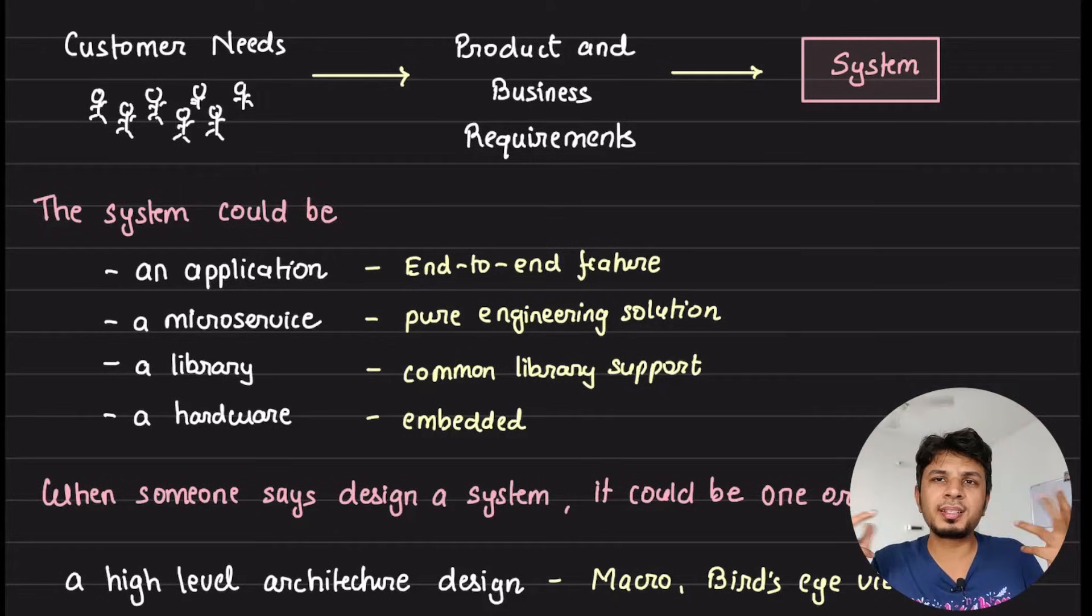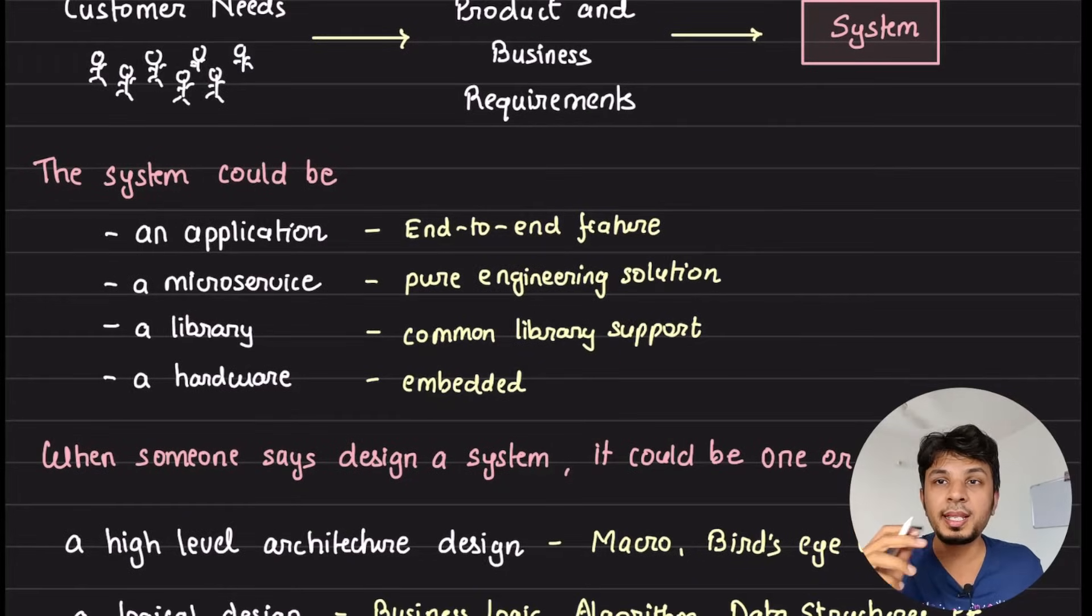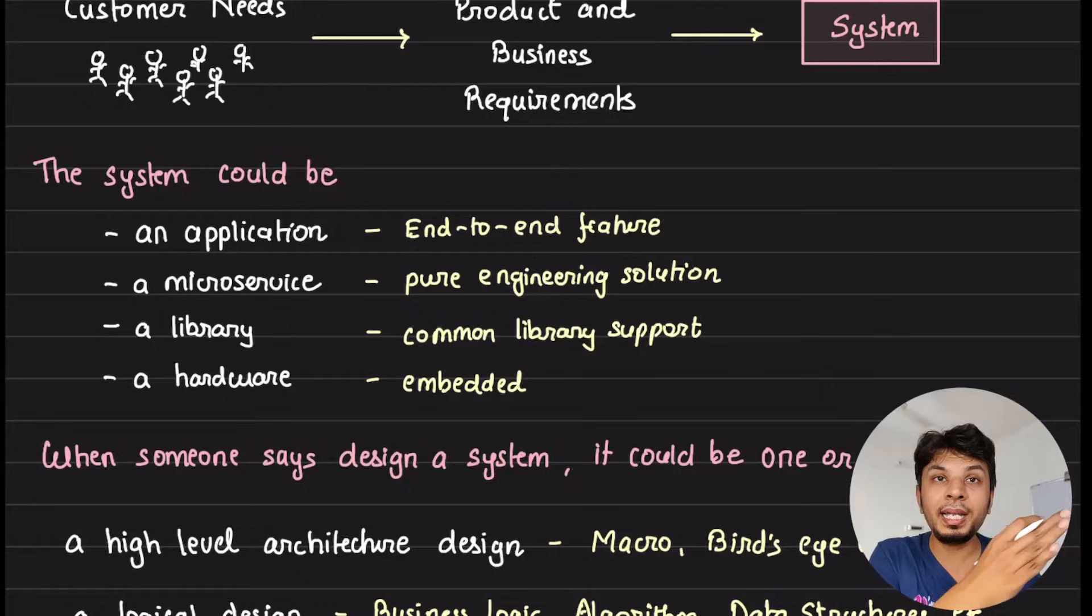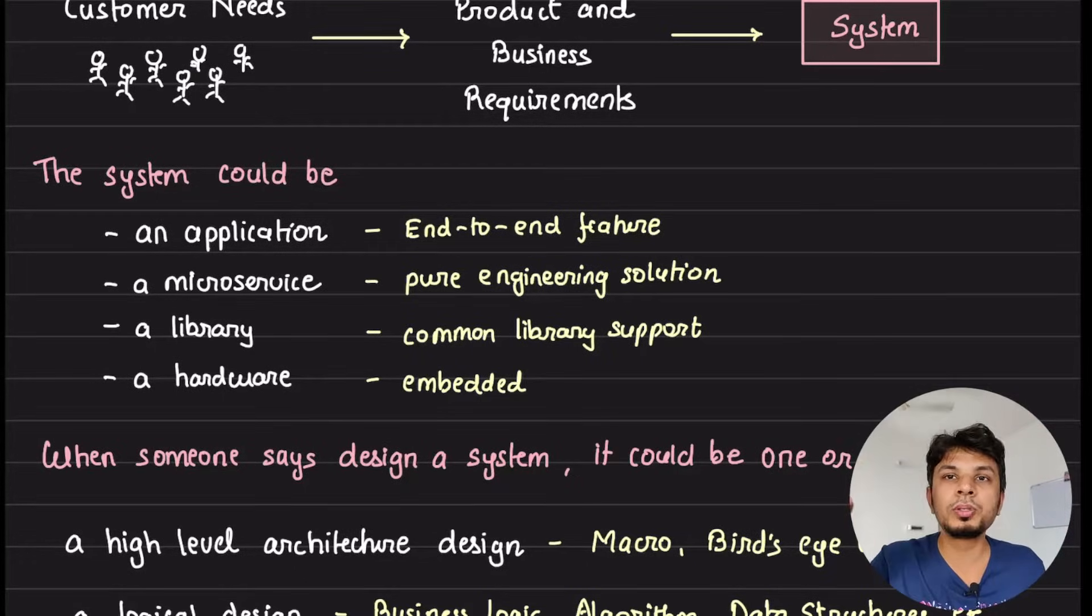A system, what exactly is a system? So system is a very generic term but what exactly is that? System could be what you are supposed to solve, could be an application - an end-to-end application having a front-end and a back-end that user uses day in and day out. It could be a microservice.